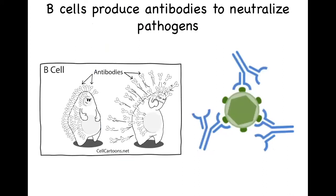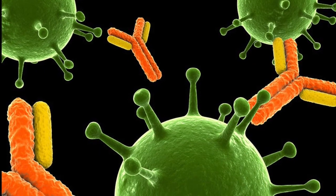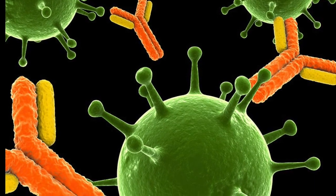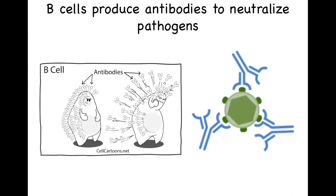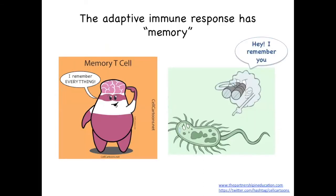B cells are the lymphocytes capable of producing antibodies, and these are very important molecules in our immune response. Antibodies are proteins that circulate in our blood and are capable of recognizing and neutralizing pathogens. When an antibody neutralizes a pathogen, it prevents it from infecting other cells and allows the immune system to get rid of it more efficiently. Another important fact about the adaptive immune response is that it can generate what is known as immunological memory. That means that every time we get infected by a pathogen, our immune system remembers it, so that if it infects us a second time, we already know how to fight it before it can cause disease.